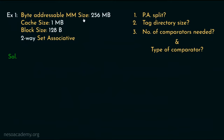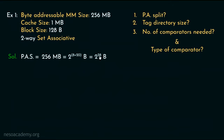The byte addressable main memory size is given as 256 megabytes. Therefore, 256 is nothing but 2 to the power 8 and megabyte is 2 to the power 20, which results in 2 to the power 28 in terms of bytes. So the size of the physical address space can be written as 2 to the power 28 bytes, and therefore for the physical address we will be needing 28 bits.